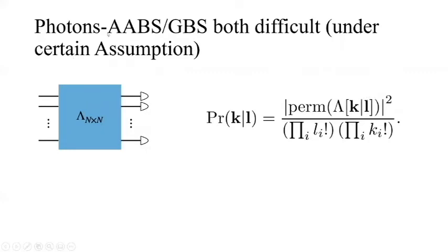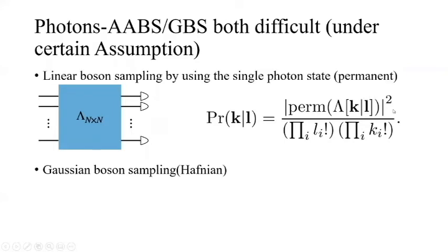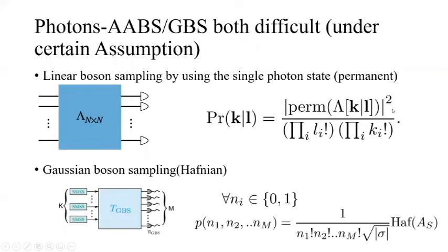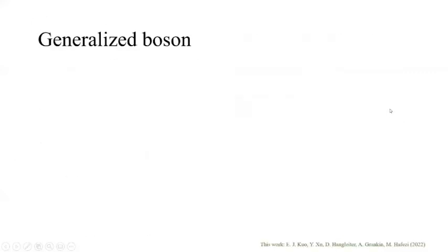Photon ABS and GBS are both difficult under some computational assumptions. To recap, for linear Boson sampling, the probability is basically permanent squared. For Gaussian Boson sampling, the result is the Hafnian.